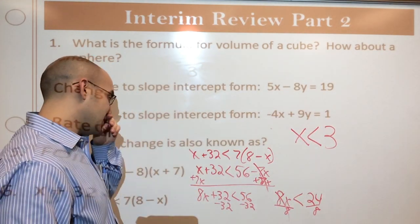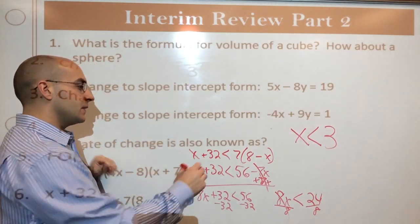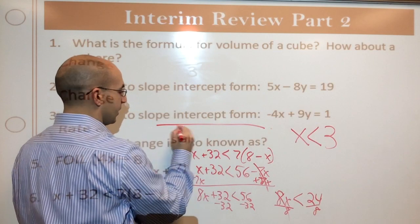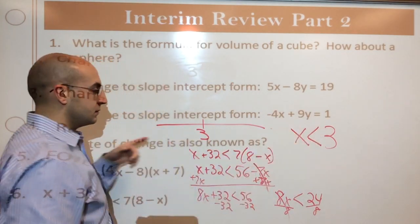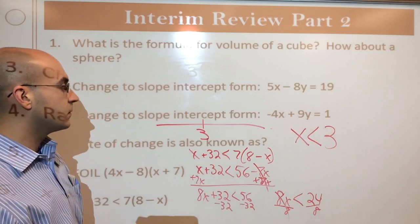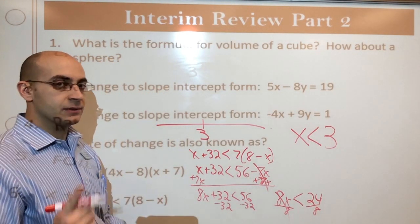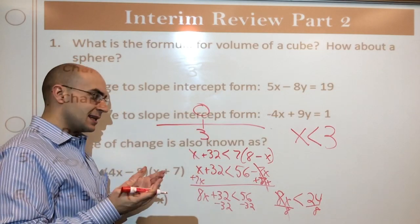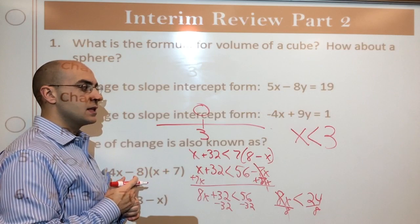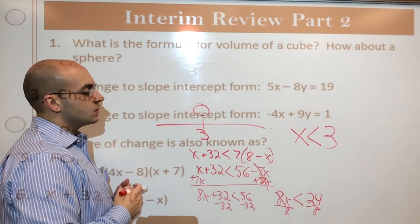Cool. Now, if I want to graph that on a number line, there's only one variable, so it's only one number one. What you do is you put the number that's actually there right in the middle. Now, less than, not less than or equal to, less than. So it's an open circle. Open circle means less than or greater than. If it was less than or equal to, or greater than or equal to, it would be a filled in circle. So it's an open circle.